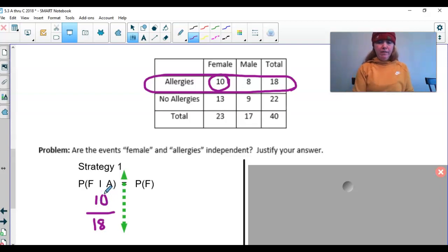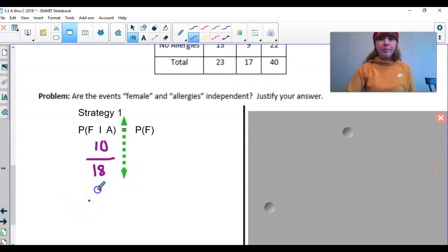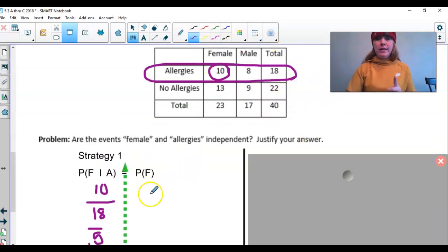Now what I want to do then is I do want to figure this out as a decimal. So 10 divided by 18 equals 0.5 repeating. Now what I want to do, so I figured out my first problem here. I want to see if this 0.5 repeating is the same as the probability of being female. Now there is no given, there's no given assumption. So this is out of everyone who was sampled.